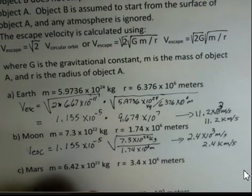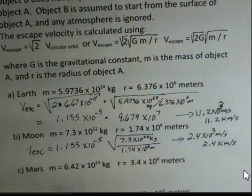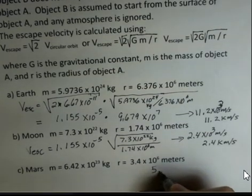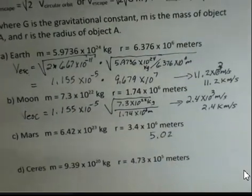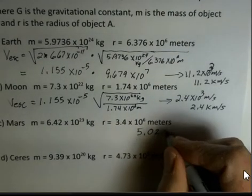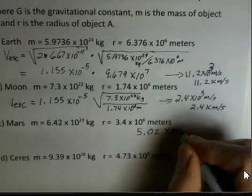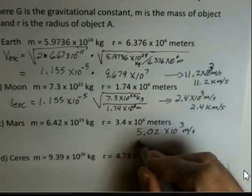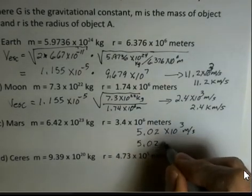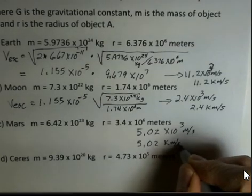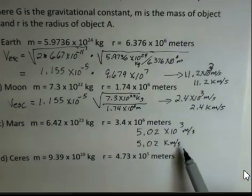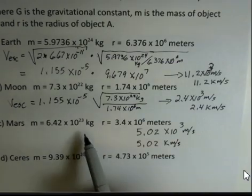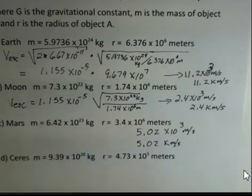Continuing on for Mars. I'm not going to bother to write down inside the square root mass divided by radius. What I came up with for Mars was 5.02 times 10 to the 3rd, you should check my work here, or 5.02 kilometers per second. It's easier to escape from Mars than from the Earth. Mars has less mass than the Earth, almost by a factor of 10.